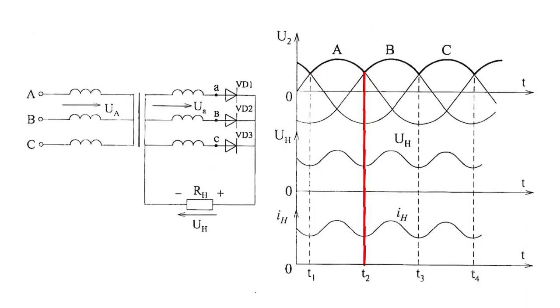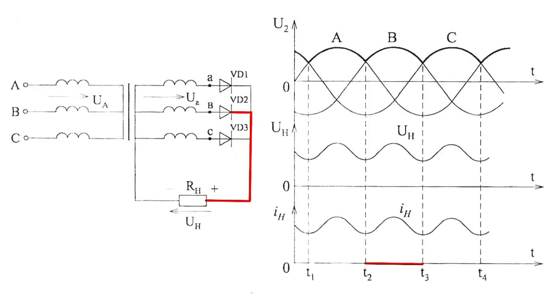At T2 moment, diode switches. VD1 diode closes while VD2 diode opens. VD2 diode switches on within the interval T2 to T3. Phase B powers the load resistance.